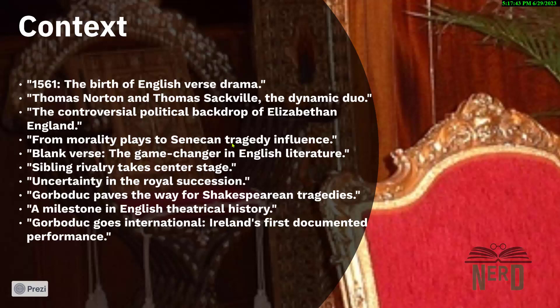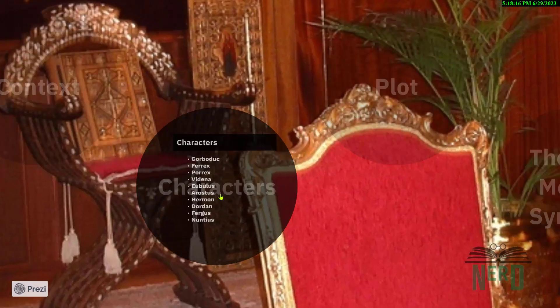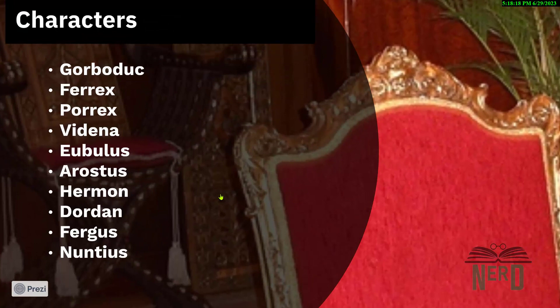Here's a cool fact: The Tragedy of Gorboduc is known for being the first play with solid evidence of a performance in Ireland — so you could say it was the first international tragedy too. Some dude named Charles Blount, who was the eighth Baron Mountjoy, staged it at Dublin Castle in 1601. That was all about the context — let's move quickly to the characters.